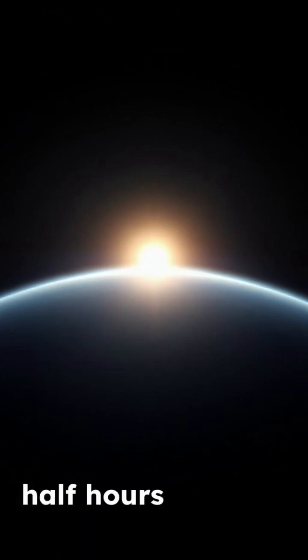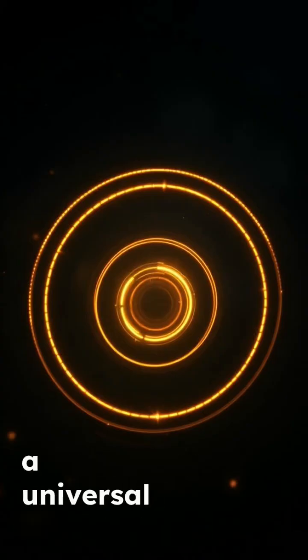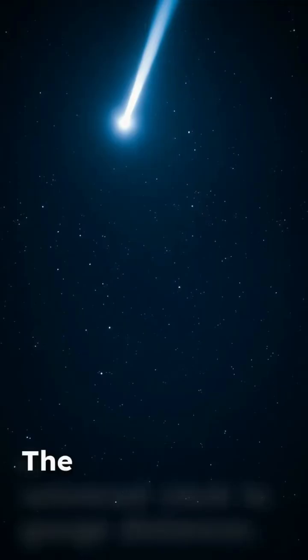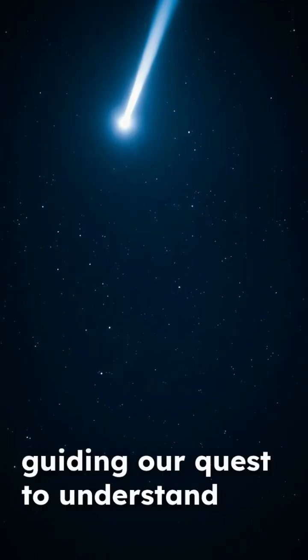Sunlight takes about four and a half hours to reach Neptune. Astronomers use light's constant speed as a universal clock to gauge distances. The speed of light continues to inspire wonder, guiding our quest to understand the cosmos.